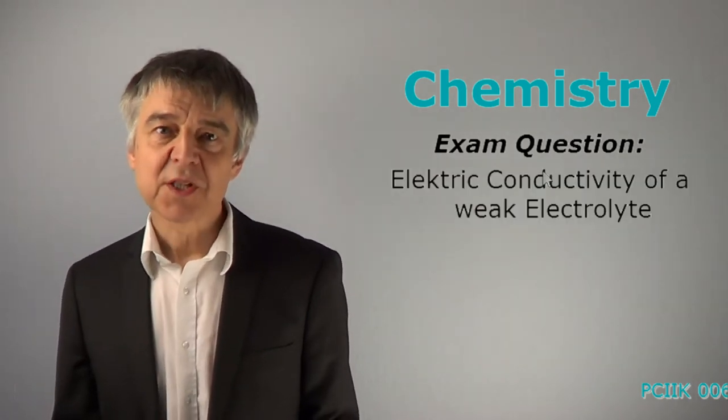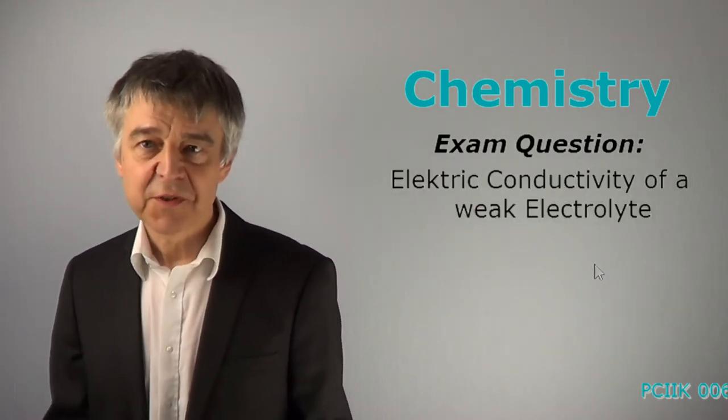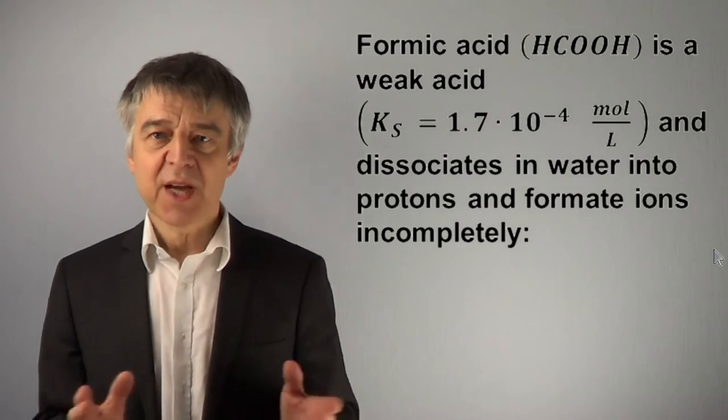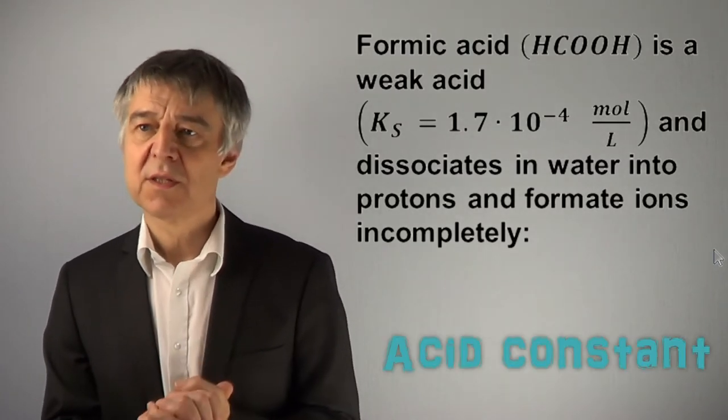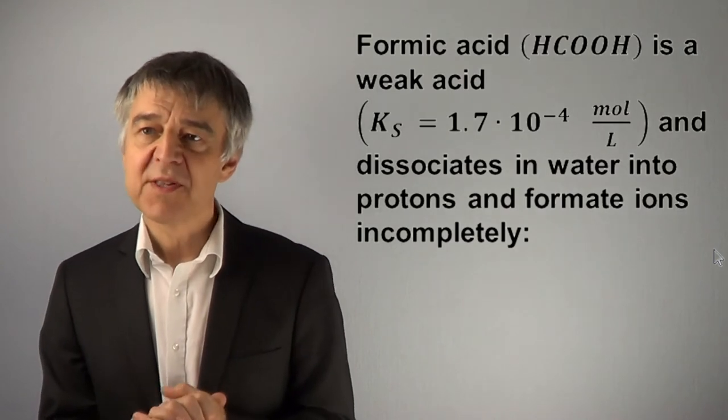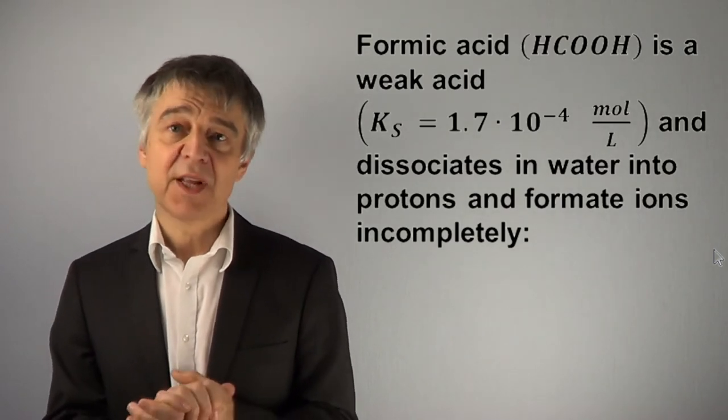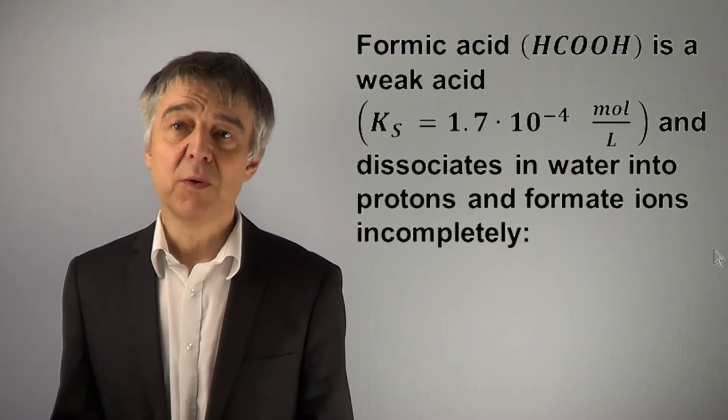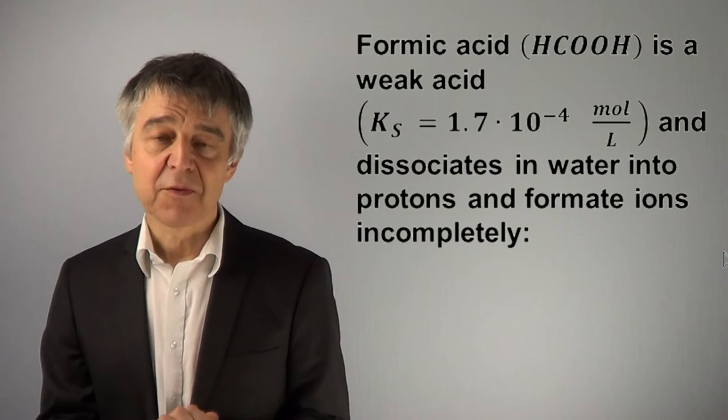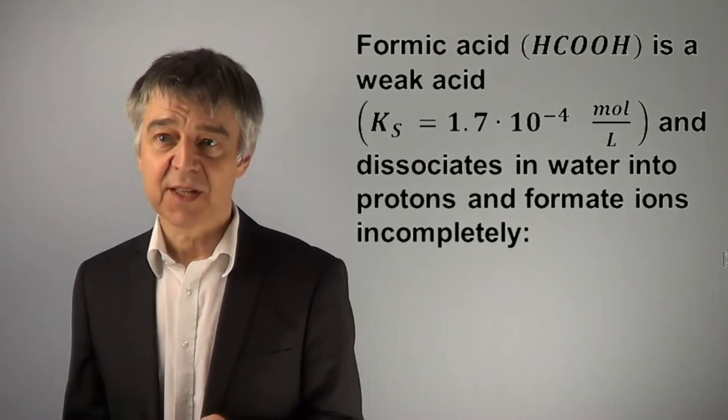In this exam question, it comes to electrical conductivity of a weak electrolyte. Formic acid is a weak acid with a Ks value of 1.7 times 10 to the negative fourth mole per liter and dissociates in water into protons and formate ions incompletely.